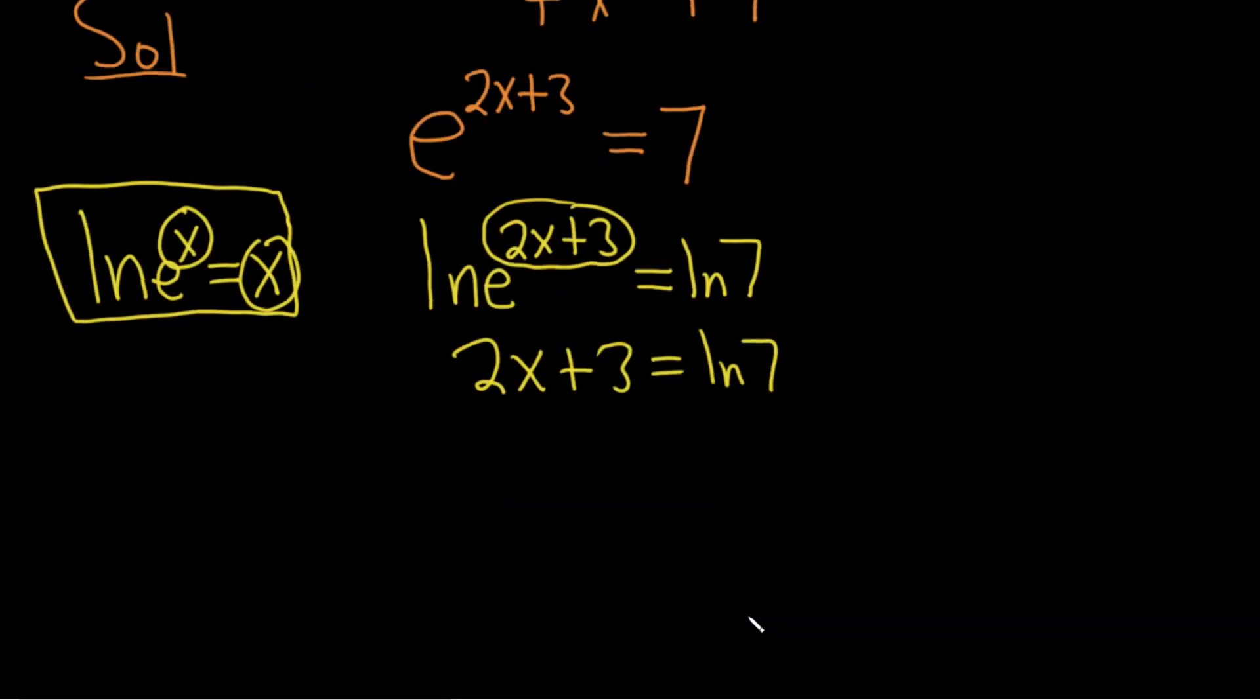And now it's not too bad. We just have to solve for x, which is right here, multiplied by the 2. So we'll start by subtracting the 3 from both sides. So we have 2x equals the natural log of 7 minus 3. Then we just divide by 2. That leaves us with x equals the natural log of 7 minus 3, all divided by 2. And that would be the answer to this equation.